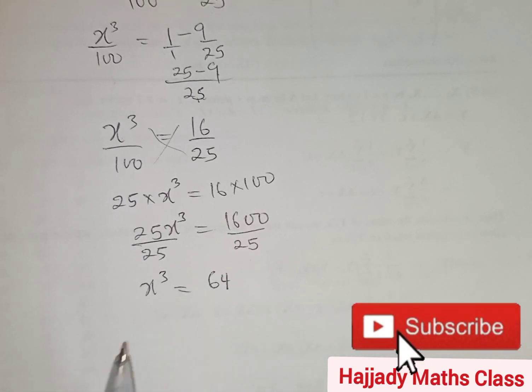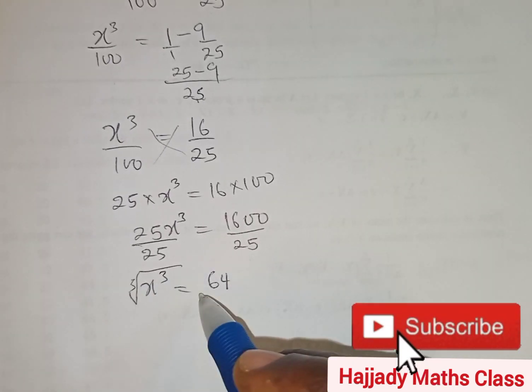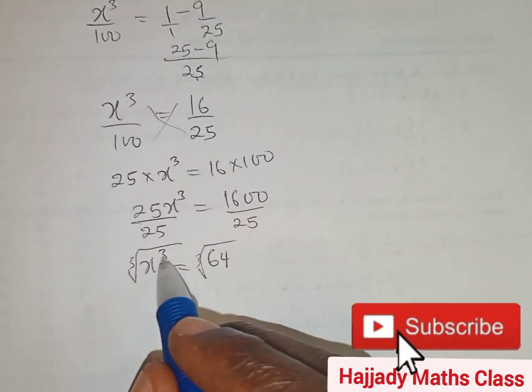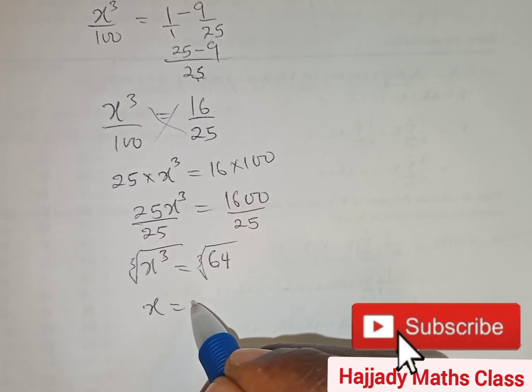So with this, to get the value of our x, just cube root both sides. Cube root of this gives x, and cube root of 64 gives 4. So there is our answer.